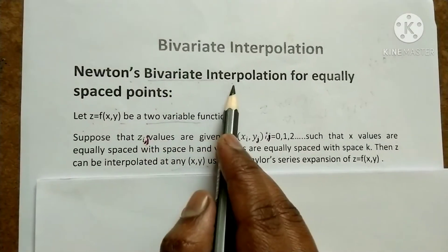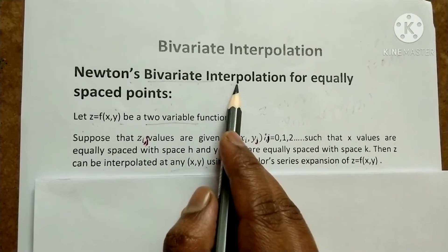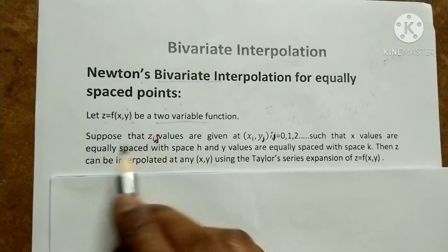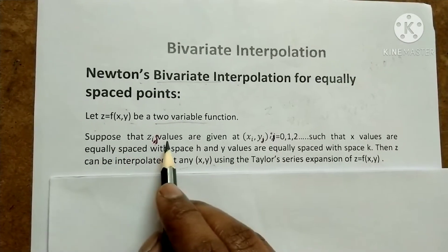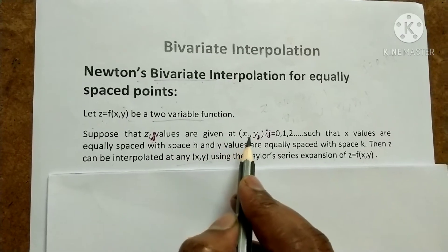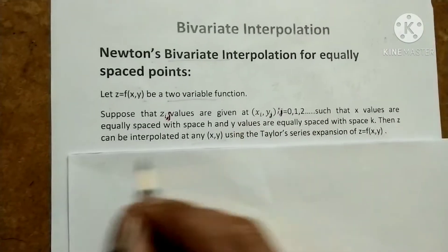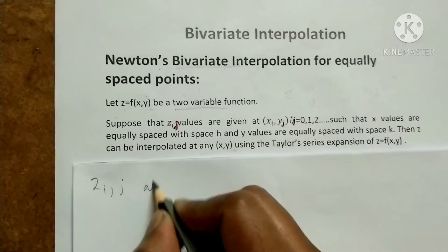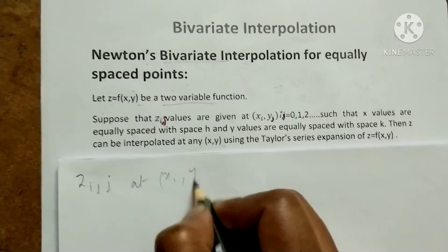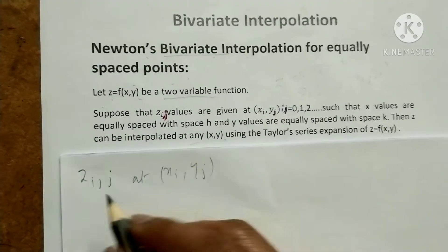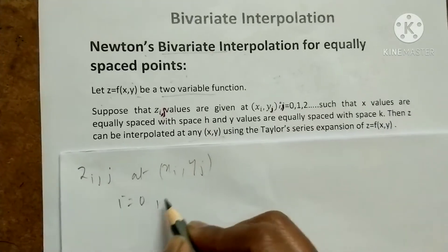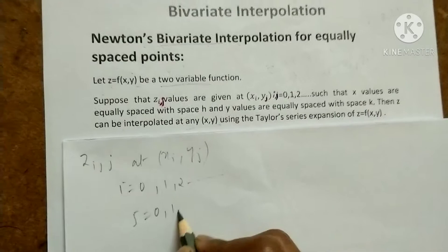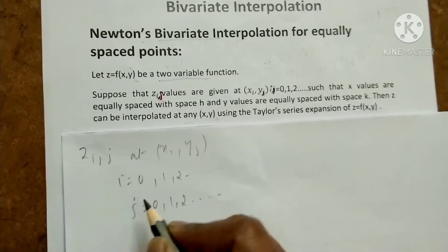Bivariate interpolation means we have to interpolate a two-variable function at some point. We have a set of z values at x,y pairs, denoted as z_i,j at point x_i, y_j, where i takes values 0, 1, 2, 3 and so on, and j also takes values 0, 1, 2, 3 and so on.